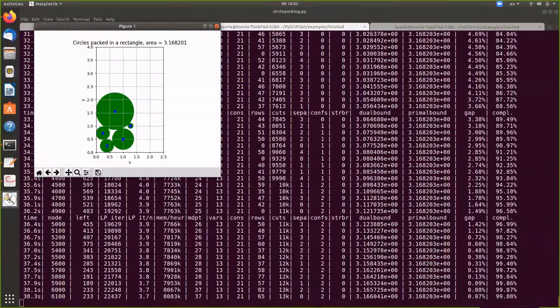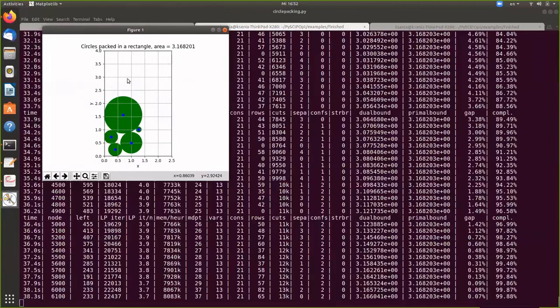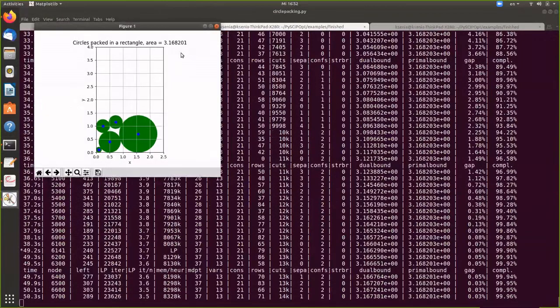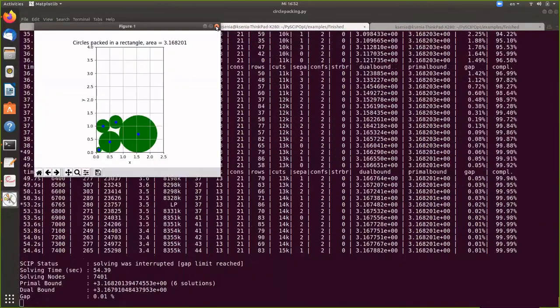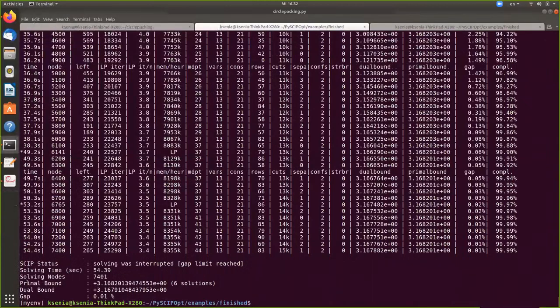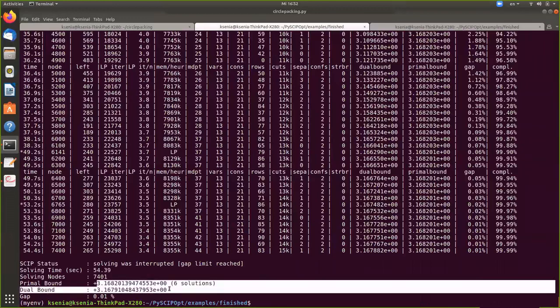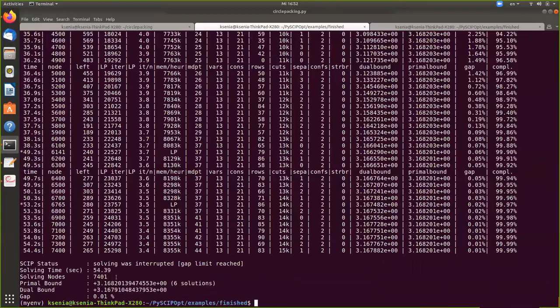So here you can see the progress, how much of the gap has been closed, how much the tree still remains. And then again, we get another solution. And finally, it should terminate. Yeah, and that should be the final solution. And then you get some information on what your optimal objective is, how many nodes this took and so on.